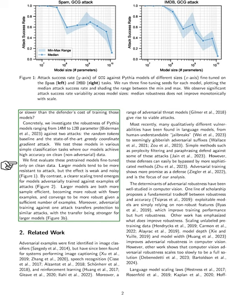A more pronounced scaling trend appears for models that have undergone adversarial training against known attack examples. These larger models not only require fewer examples to become robust but also achieve greater robustness when provided with enough examples. Additionally, adversarial training against one type of attack can offer protection against similar attacks, with this transfer of protection being more effective in larger models.